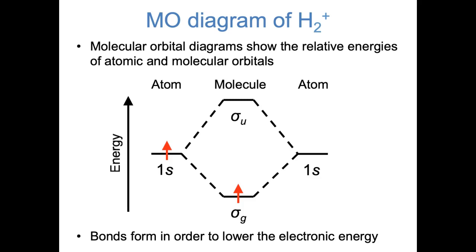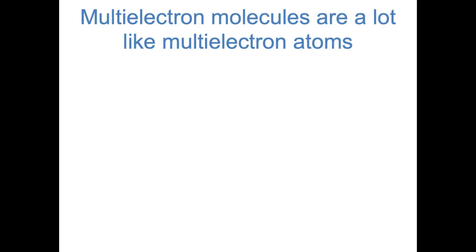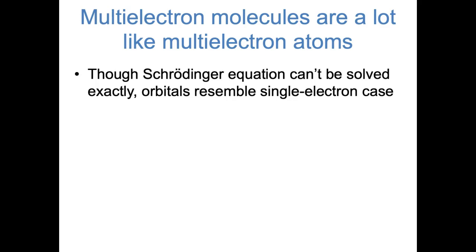Looking at the MO diagram of H2+, we can begin to understand why bonds form. When the bond formed, the electron moved down in energy from the atomic orbital to the bonding molecular orbital, and when something is lower in energy, it's more stable. Now that we've seen H2+, we're ready to look at multielectron bonds and molecules. This is similar to when we looked at multielectron atoms: it's possible to exactly solve the Schrödinger equation for hydrogen, but for multielectron atoms or molecules, we can't solve it exactly and need approximations. The orbitals from the one-electron case will still look pretty similar when we start adding more electrons.